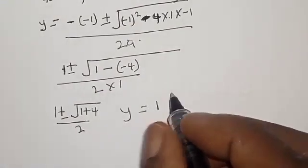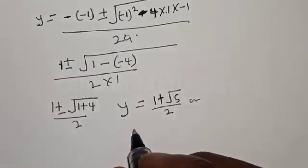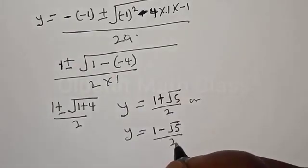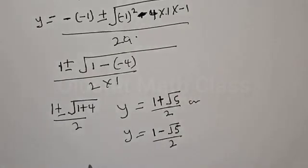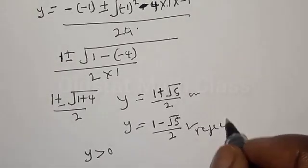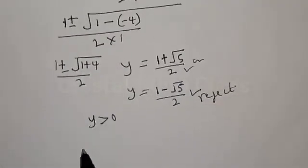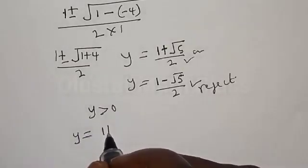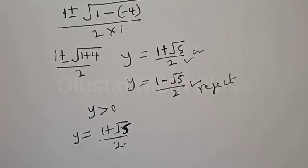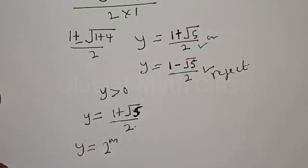So we have 1 plus or minus square root of 1 plus 4 over 2, therefore y equals 1 plus square root of 5 over 2, or y equals 1 minus square root of 5 over 2. But since y must be greater than 0, we reject the negative solution and keep y equal to 1 plus square root of 5 over 2.